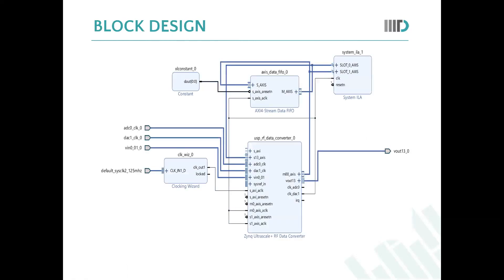This is the block design that we got from Vivado. As you can see, we are using the RF data converter. We are giving the analog input at the V-in port and getting the output from the V-out port. We are also giving a feedback to the data feedback path.